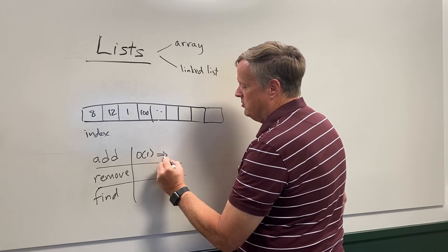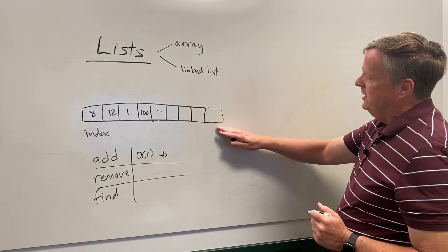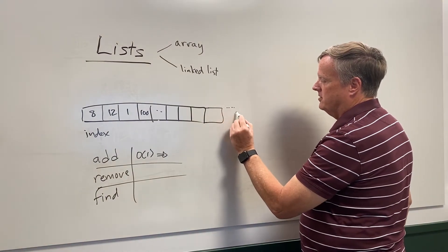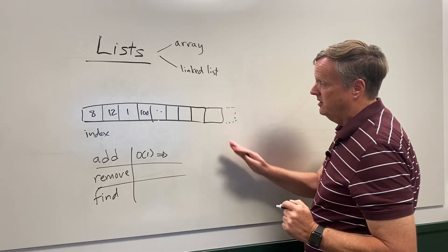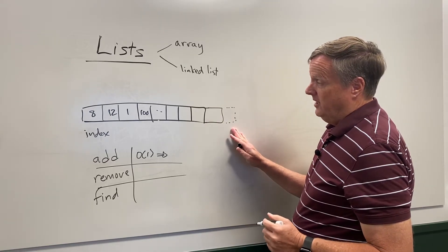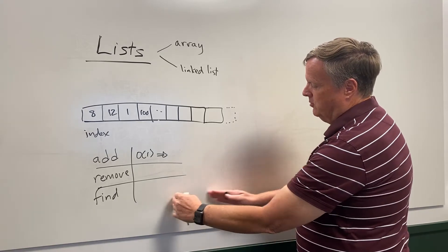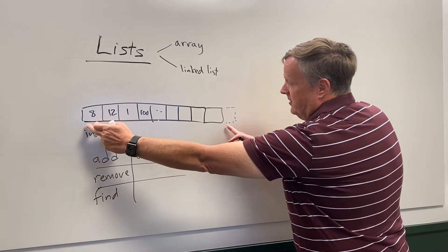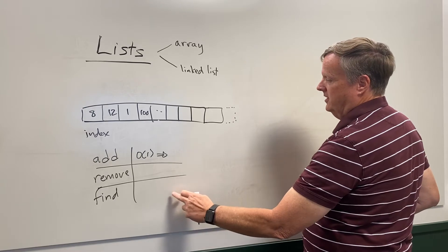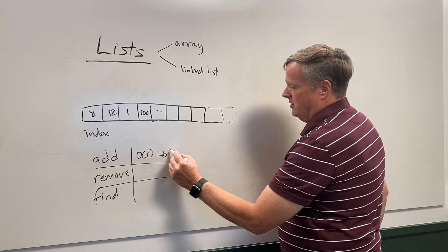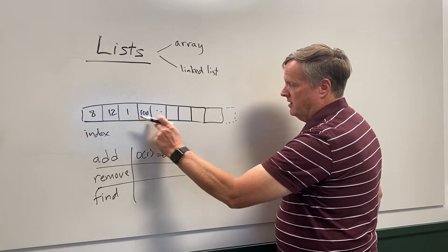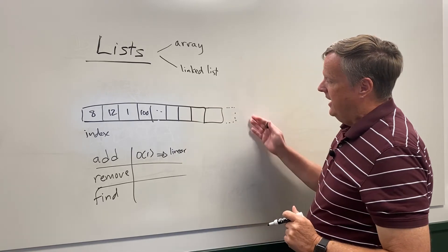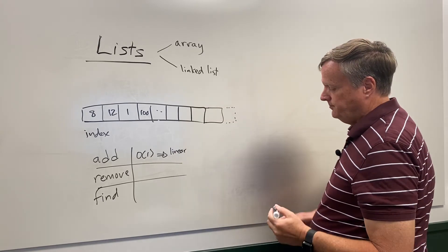That's mostly true, but consider what happens if you add so many elements that you run out of contiguous memory. If there's no more contiguous memory available, you have to find somewhere else in memory that can hold a contiguous block big enough, copy everything from the old location into that new spot, and then add the element. If you run out of memory, that copy makes it a linear operation — O(n) — because you have to touch every single element once.